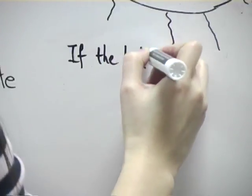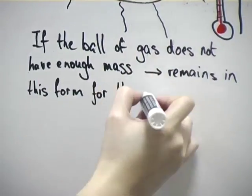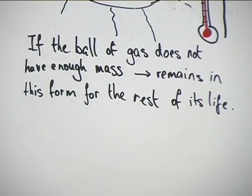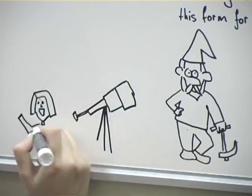If the ball of gas does not have enough mass because not enough atoms have been collected, then it will remain in this form for the rest of its life, only glowing dimly. Some astronomers call this a brown dwarf.